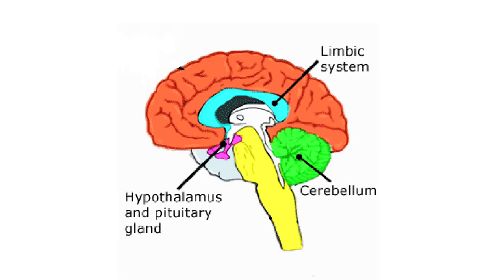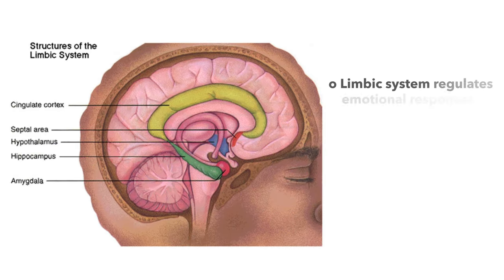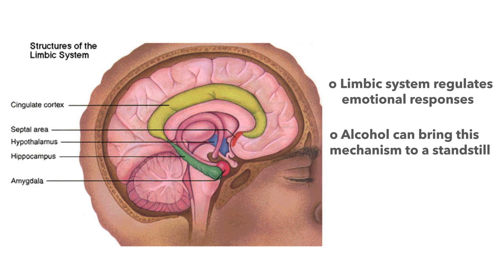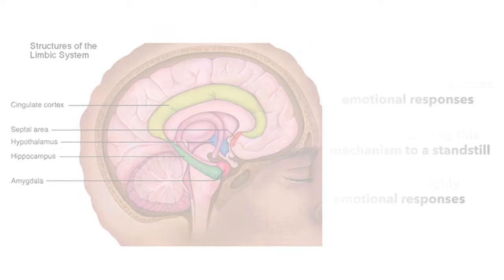Alcohol is now making an appreciable impact on these areas of the brain. The limbic system regulates emotional responses. It essentially helps us inhibit ourselves. Most of the time, we know when to keep our mouths shut or when to back down from a confrontation. Alcohol can slowly bring this regulatory mechanism to a standstill, resulting in highly emotional or unusually aggressive responses becoming more and more common.